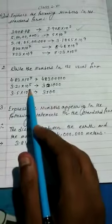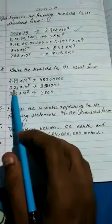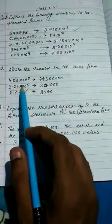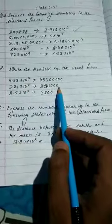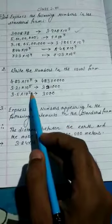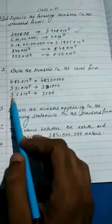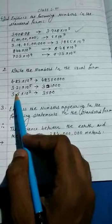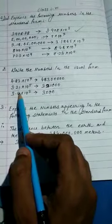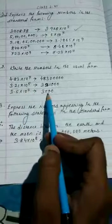Next, 3.21 into 10 to the power 5. To write 321, we need 10 to the power 2, so 5 minus 2 becomes 10 to the power 3, meaning 3 zeros. Next, 3.5 into 10 to the power 3. If we multiply by 10, we get 35, then 10 to the power 2 means 2 more zeros, giving us 3500.